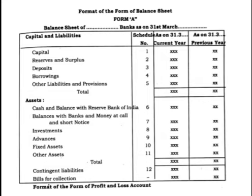Below total assets, you have to write note number 12 for contingent liabilities, and then bills for collection — which does not carry any note number, just write the amount. This is the format in which the balance sheet has to be prepared. Now let us take up the question.